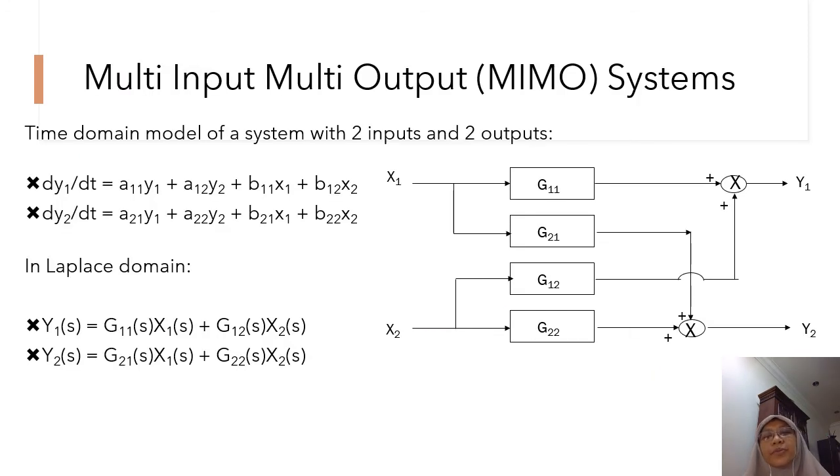For multi-input, multi-output systems, I'm going to show you an example of a system with two inputs and two outputs. The inputs are X1 and X2 and the outputs are Y1 and Y2. The time domain model is represented by these two equations. You can see G11, G12, G21, G22 are the transfer functions. When we derive transfer functions, remember that we set all the other variables that we are not interested in to zero.